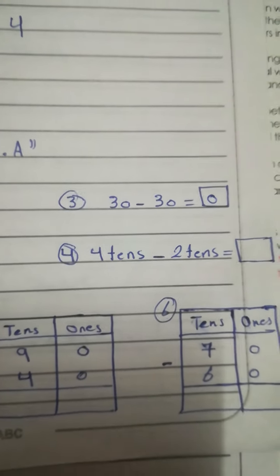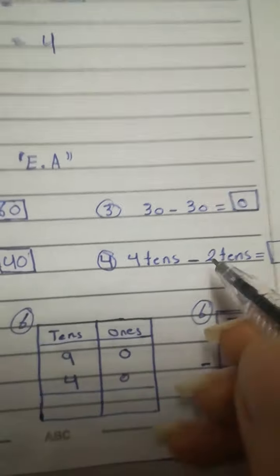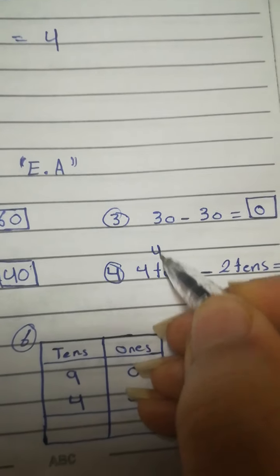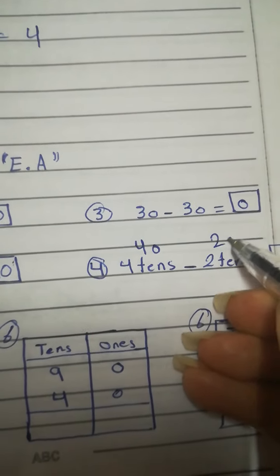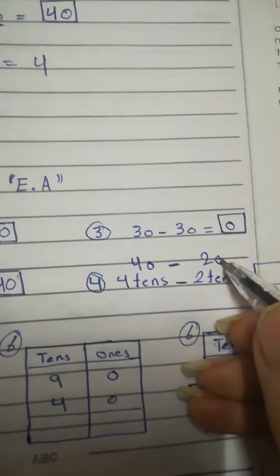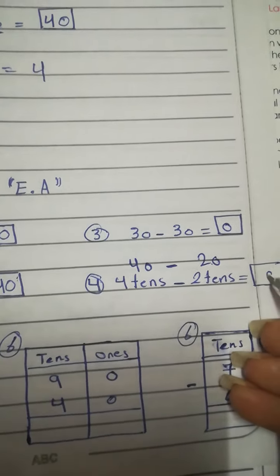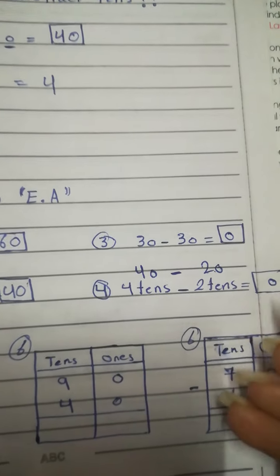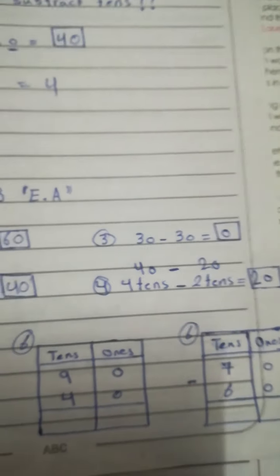Okay, number 4. 4 tens minus 2 tens. Now, 4 tens is what? It's 40. 2 tens is 20. 40 minus 20. 0 minus 0 is 0. 4 minus 2 is 2. So, 40 minus 20 is 20.